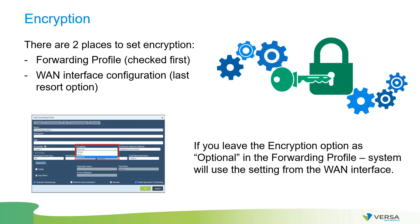You can define whether traffic should be encrypted. There are three settings: always encrypt, never encrypt, or optional. When set to optional, the encryption setting is taken from the interface configuration — for example, MPLS traffic never encrypted, internet traffic always encrypted. If you want all traffic of a certain type to always be encrypted, you can explicitly specify that in the forwarding profile.